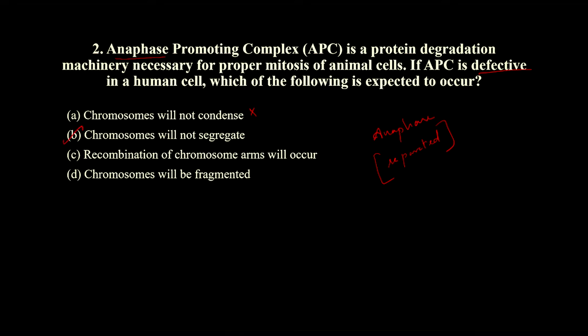Option C — recombination of chromosome arms will occur — no, that is not going to happen here, as we are speaking about mitosis and this comes under meiosis. Option D — chromosomes will get fragmented into small pieces — no. The correct option is B.